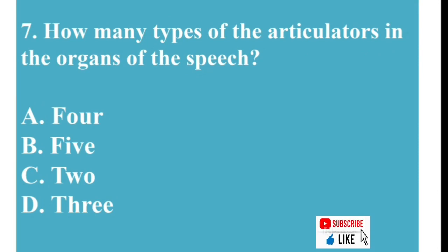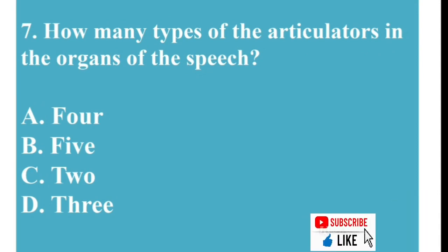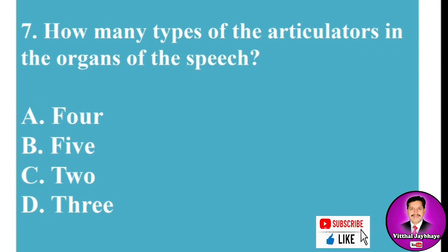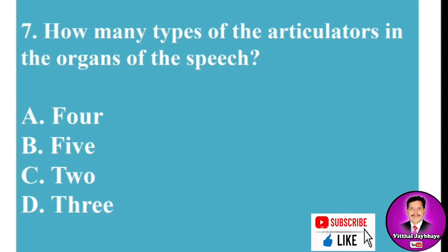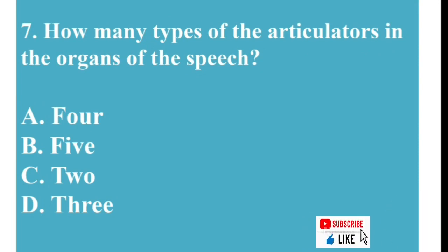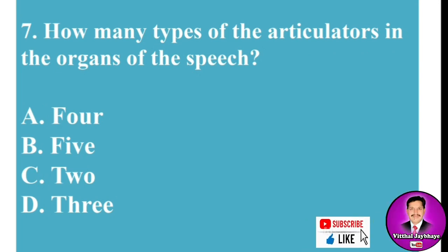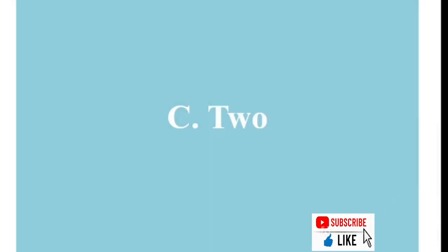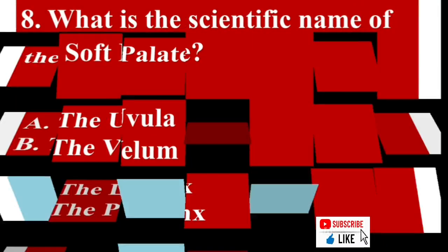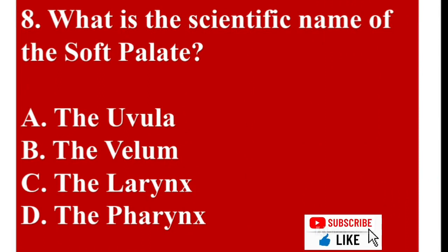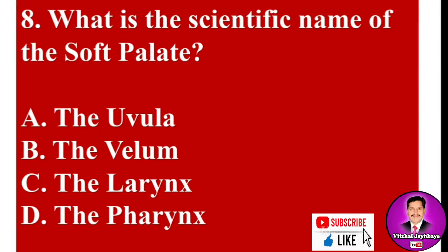MCQ number seven: How many types of articulators are there in the organs of speech? Options: A) 4, B) 5, C) 2, D) 3. The correct answer is C — 2.